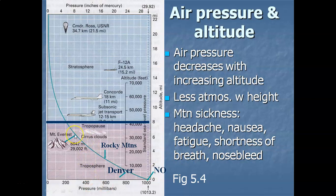Hikers on top of Mount Everest cannot survive on 300 millibars of air pressure. That 300 millibars is not pushing anywhere near enough oxygen that your body needs to survive — you will die. Hikers on top of Mount Everest need supplemental oxygen; they carry cans of oxygen in order to survive their hike to the top.